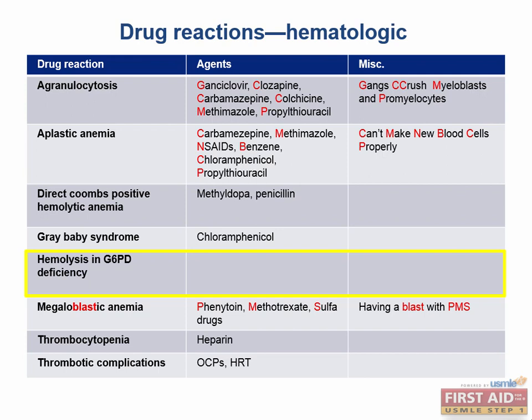There are a few drugs you should remember that can cause hemolysis: isoniazid (INH), sulfonamides, dapsone, primaquine, aspirin, ibuprofen, and nitrofurantoin. A slang way to remember this is 'hemolysis is depain,' where DEPAIN represents the drugs that can bring about hemolysis.